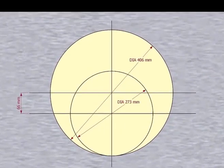The large side OD is 406 millimeters, the small side OD is 273 millimeters, and the eccentricity is 66 millimeters.